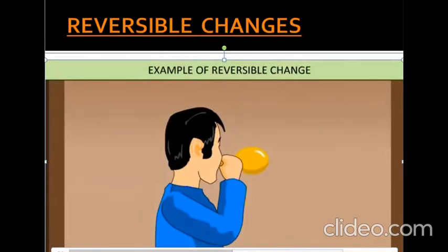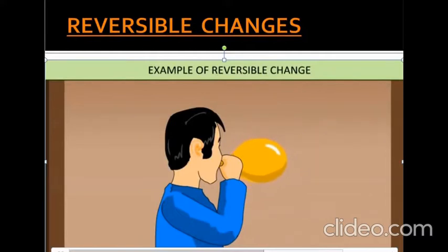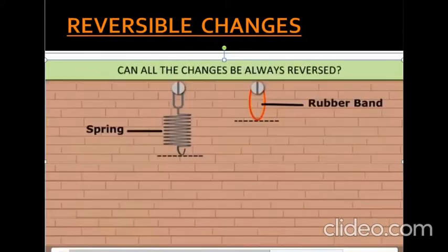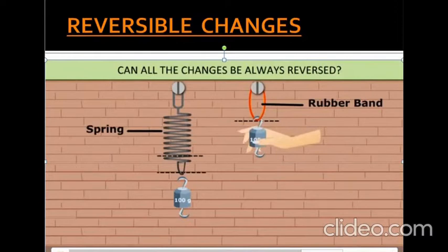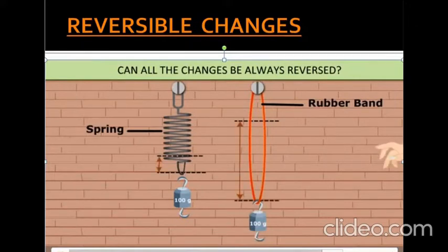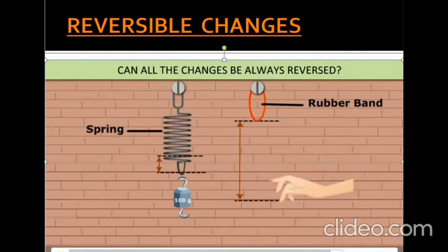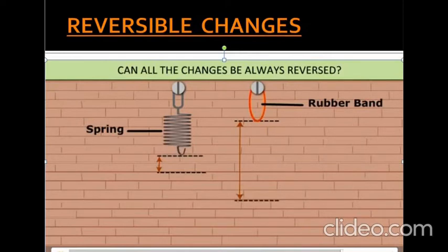Let us study some examples of reversible change. Take a balloon and blow air into it. You notice that the balloon changes its shape and size — this is a reversible change. Now suspend a rubber band and a steel spring from separate hooks near a wall and mark their positions. Add a weight of 100 grams to each. The rubber band and the steel spring get stretched, with the rubber band stretching more. Remove the weights and observe — they return to their original positions. You can conclude that the stretching of a rubber band and steel spring is a reversible change.